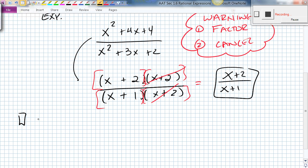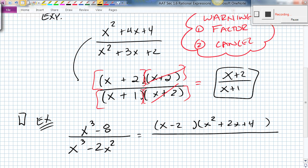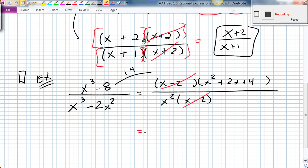Here's another example. If I have x to the third minus 8 all divided by x to the third minus 2x squared. The top is a difference of two cubes, which turns out to be x minus 2 times x squared plus 2x plus 4. If you don't know that, look that up in section 1.4. The bottom factors to x squared times x minus 2. Therefore, this and that can cancel out. So I have x squared plus 2x plus 4 all divided by x squared.